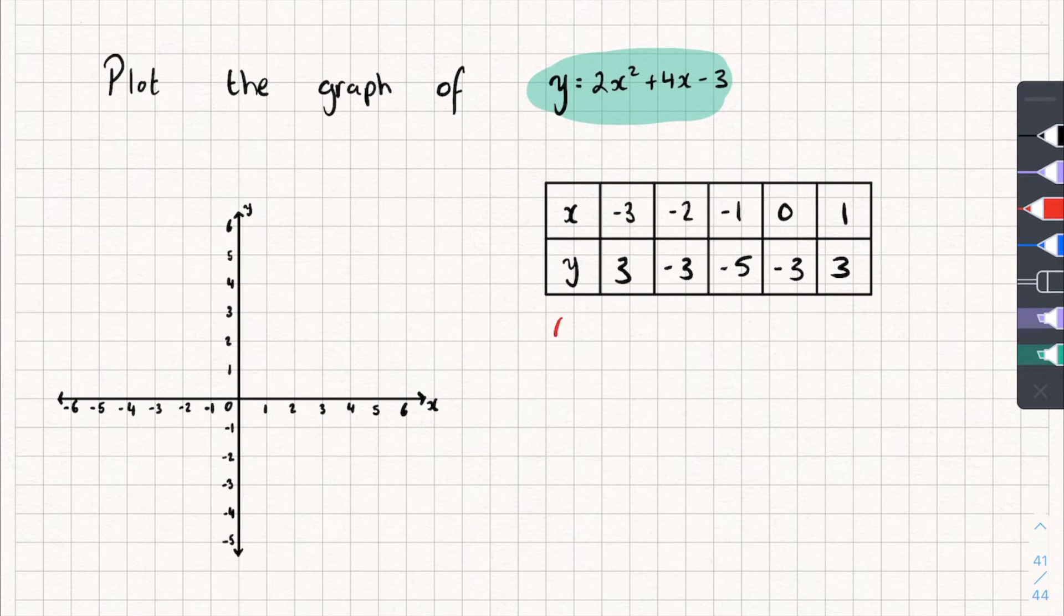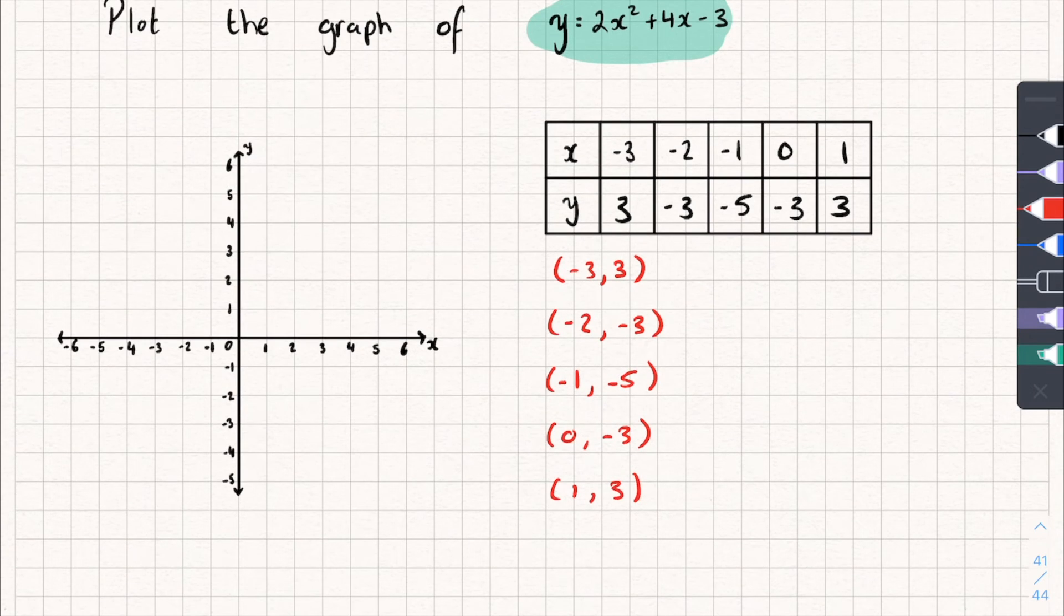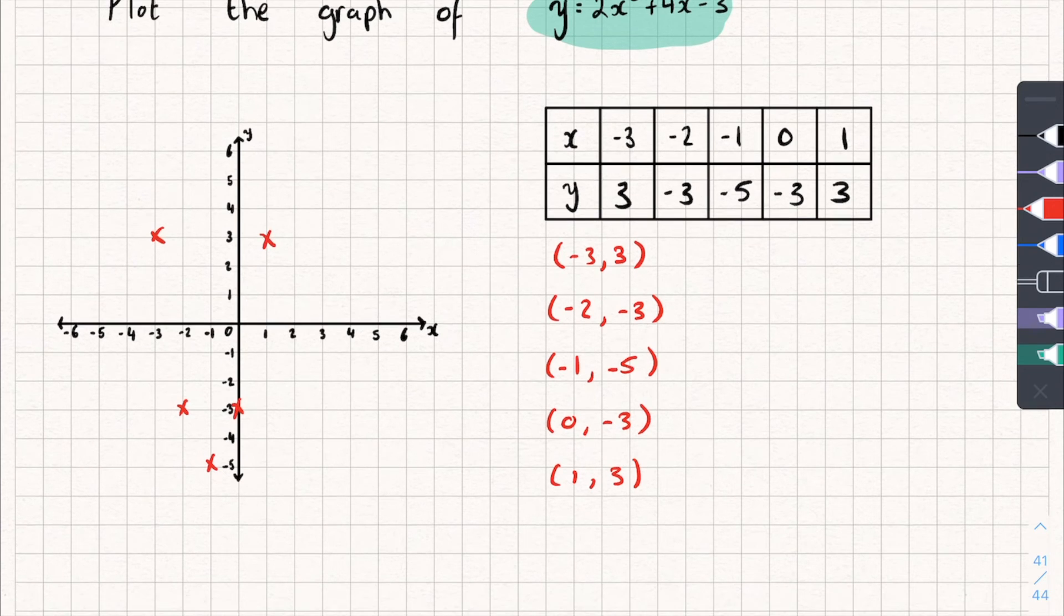Now once again, we've got coordinates here. So we've got when x is negative 3, y is 3. Negative 2 and negative 3. We've got negative 1 and negative 5. We've got 0 and negative 3. And we've got 1 and 3. So all I'm going to do now is plot these points on my graph. So we've got negative 3 and 3. Negative 2, negative 3. Negative 1, negative 5. 0 and negative 3. And 1 and 3.